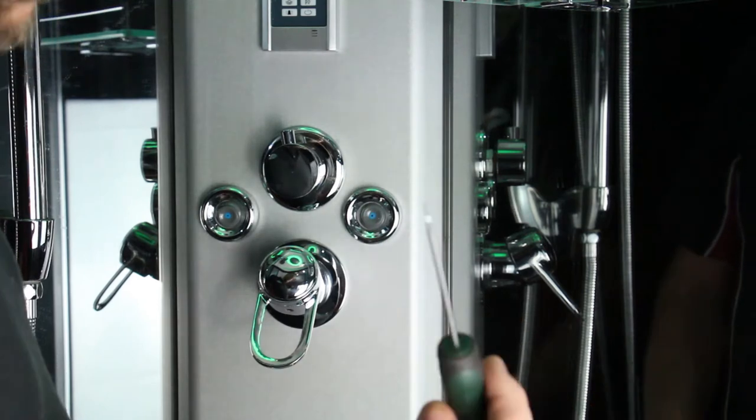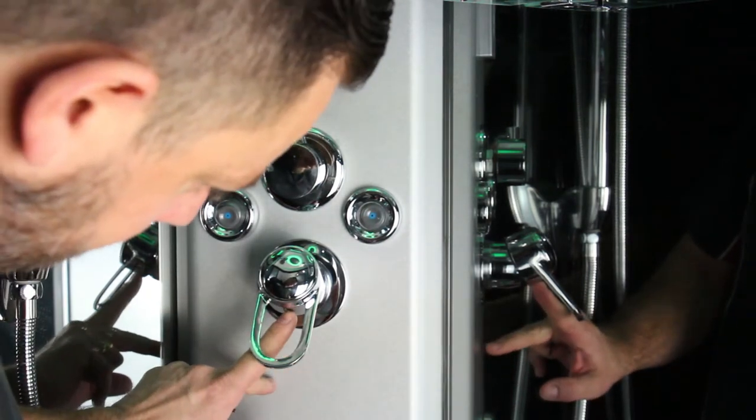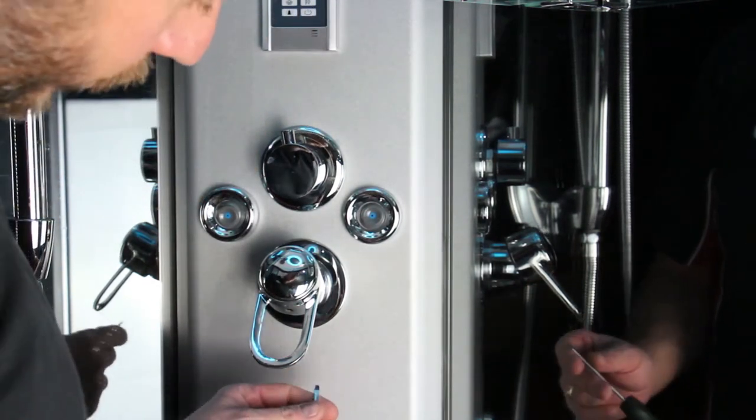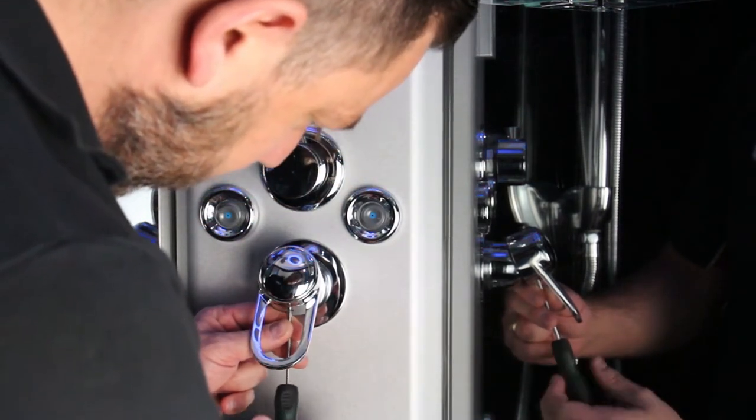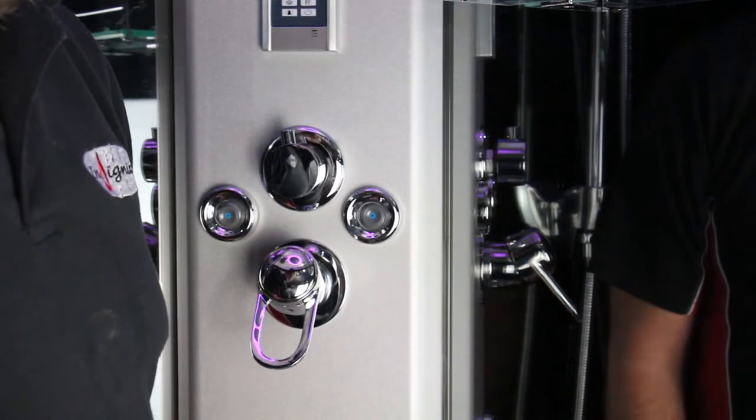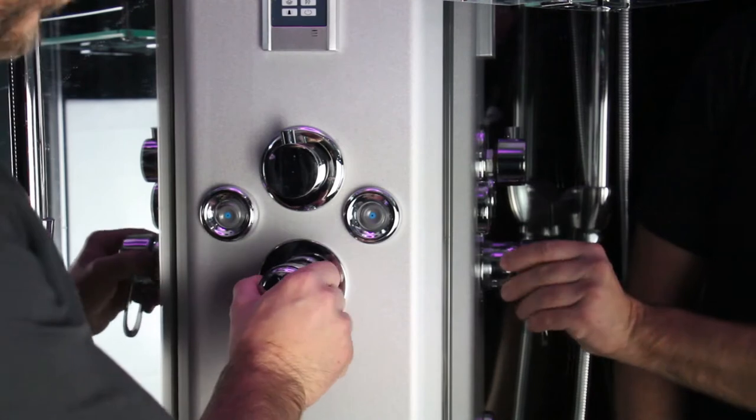Next you will need the flat headed screwdriver. Inside there is a grub screw which you can remove simply by locating and unscrewing. Once you have removed the grub screw, remove the handle easily.